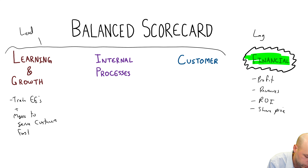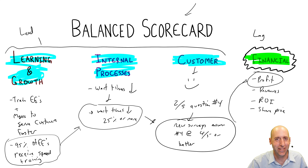The whole idea is that these things link together: if most employees receive speed training, then wait times fall by 25% or more, then customers become more positive on surveys, and that leads to better customer retention and better profits. The profit — that's the lagging indicator highlighted in green. But the balanced scorecard says: do the things highlighted in blue first, measure them, chase them, push your company in those directions. The financial outcome is almost an afterthought — it's the result of your good work on the leading indicators.